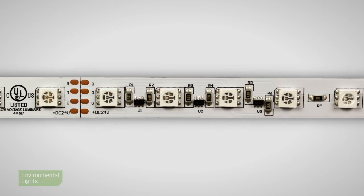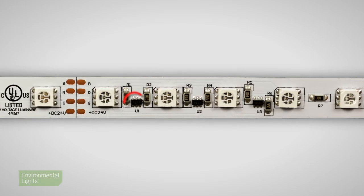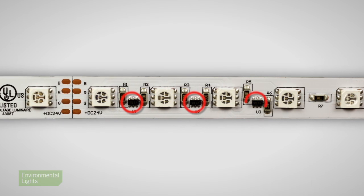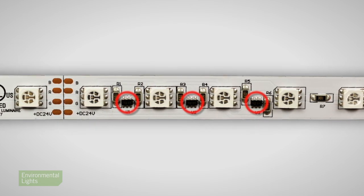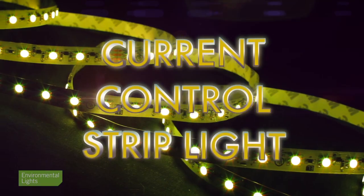Now there's one other innovation that came along fairly recently where the current limiting resistor in a constant voltage strip is replaced by a little chip that attempts to provide constant current. This is a better way than using current limiting resistors but it costs a little bit more. Environmental Lights has an extensive line of such constant voltage strip which we call current control.